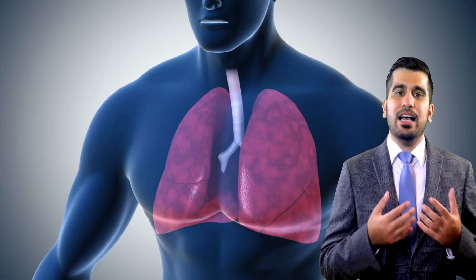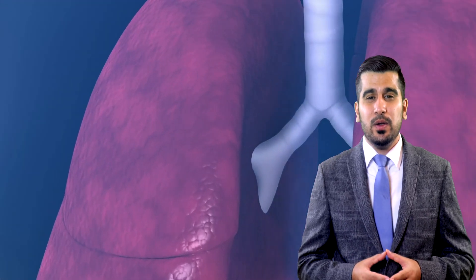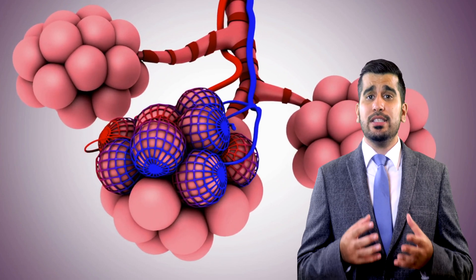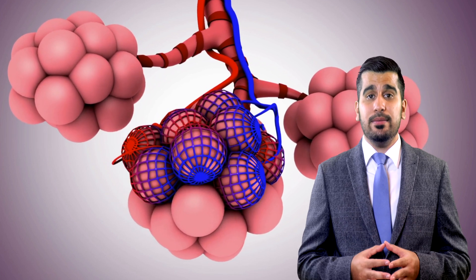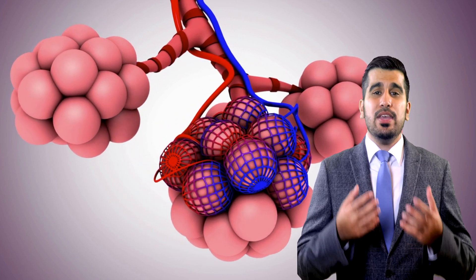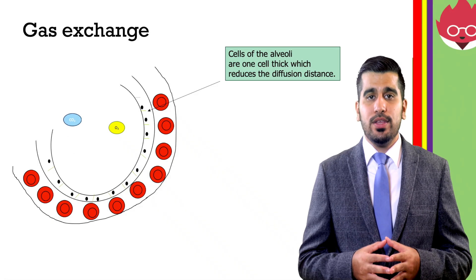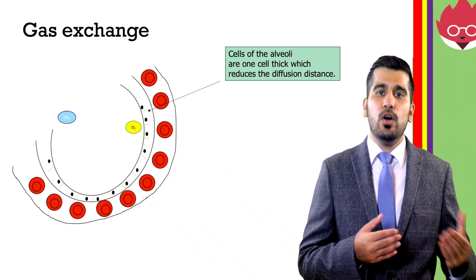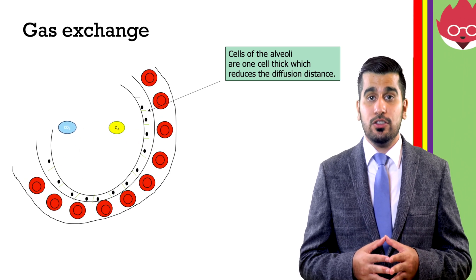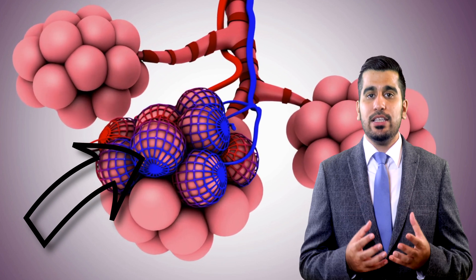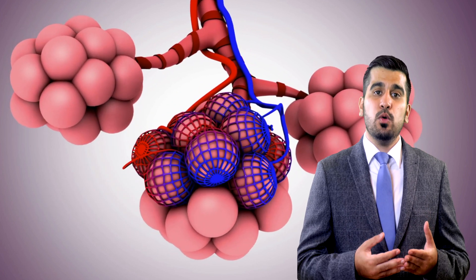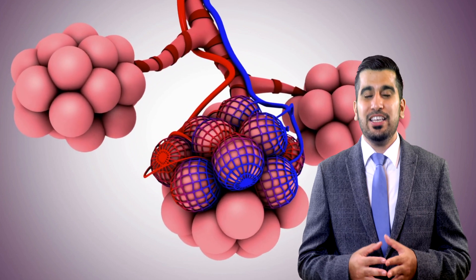Finally, our respiratory system has lungs which contain alveoli. In adult humans, the alveolar number can range from 274 to 790 million. They help dramatically increase the surface area to volume ratio. Their walls are also one cell thick to reduce the diffusion distance, allowing oxygen and carbon dioxide to be easily and quickly exchanged. The network of blood capillaries surrounding each alveolus helps transport molecules to and from the exchange surface.